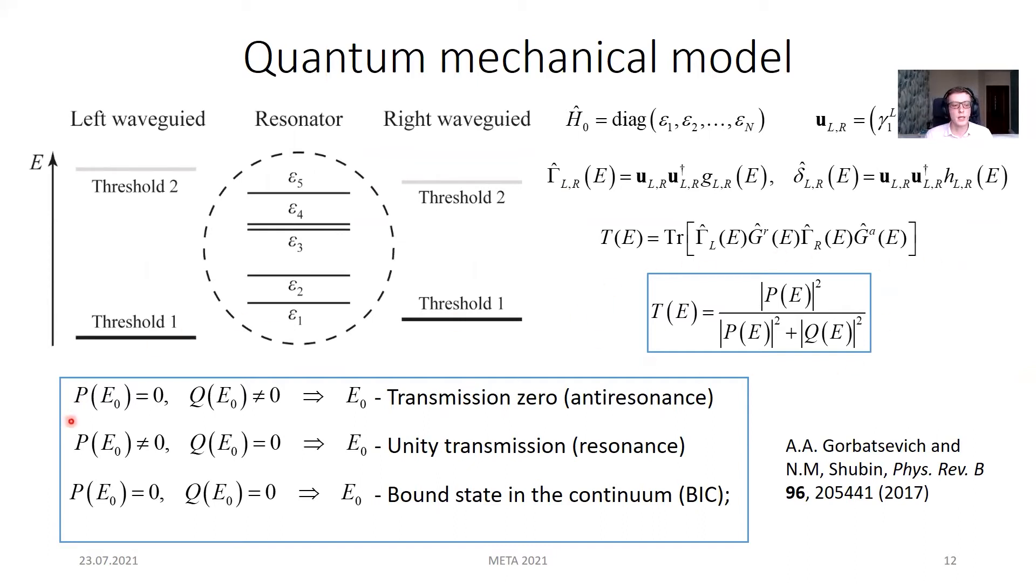In our previous paper, we have shown that the transmission coefficient can be written in a form more appropriate for analysis of interference phenomena. Indeed, in this form, one can see that real root of P function corresponds to the anti-resonance, zero transmission. Real root of Q function corresponds to resonance, unity transmission. And the common root of P and Q functions, common real root, indicates the formation of bound state in the continuum.